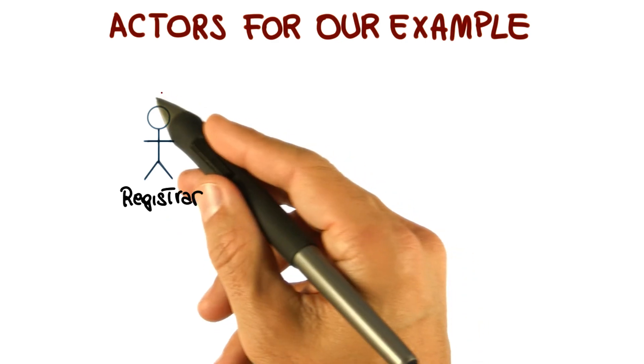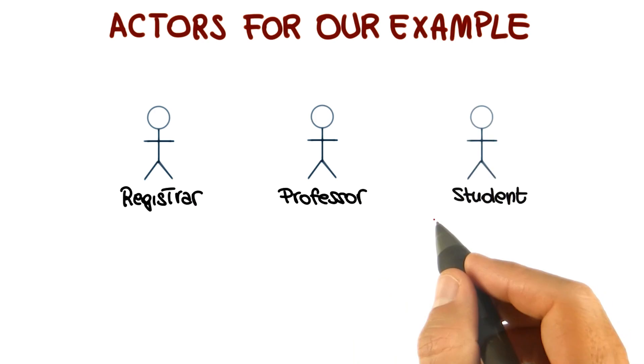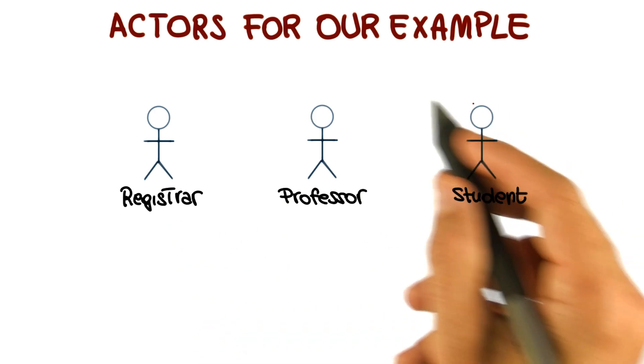So we have the registrar, and notice how for every actor, we clarify the role that the actor plays. We have the professor, and we have the student. So here, these are the three actors that we identified for our system.